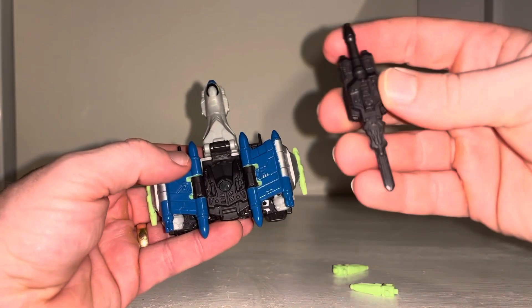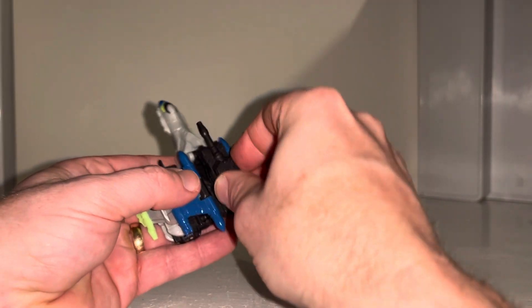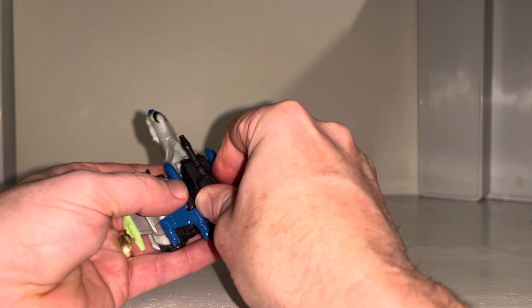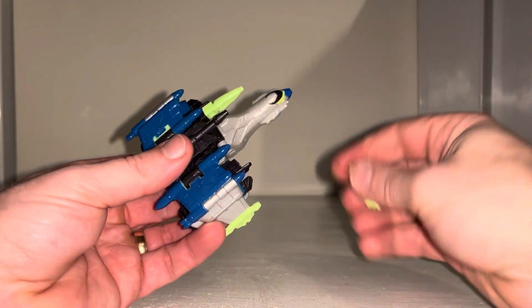Now we just need to add the finishing touches. We're going to pop the main weapon via the tabs and the cutouts on the roof there, and then these little parts are going to go into the front as well. There you have the alternate mode.